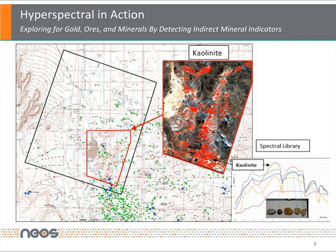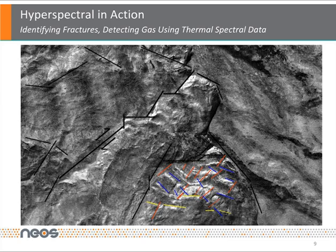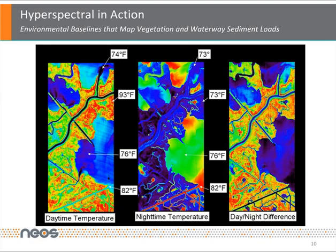Searching for natural gas can also be greatly improved by using hyperspectral imagery. Using thermal spectral data, fractures can be identified, and these fractures can help to identify the presence of natural gas. Environmental baselines can also be developed using hyperspectral data. One example is creating detailed maps of vegetation and waterway sediment loads.